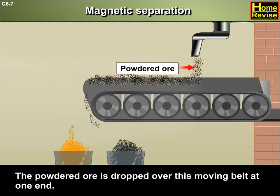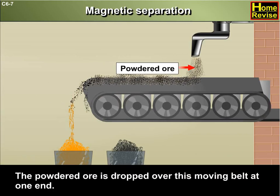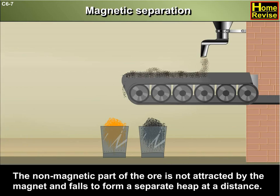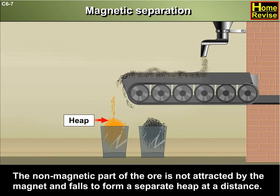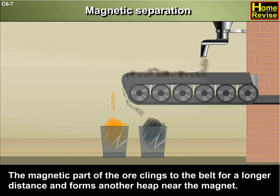The powdered ore is dropped over this moving belt at one end. The non-magnetic part of the ore is not attracted by the magnet and falls to form a separate heap at a distance. The magnetic part of the ore clings to the belt for a longer distance and forms another heap near the magnet.